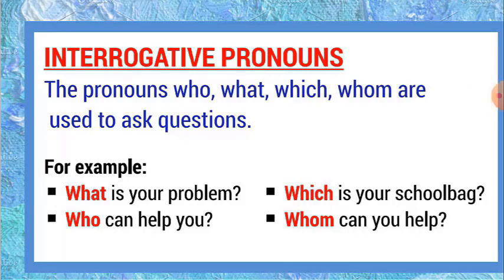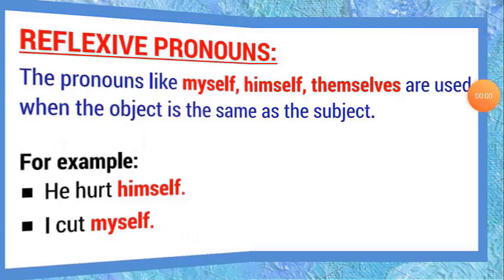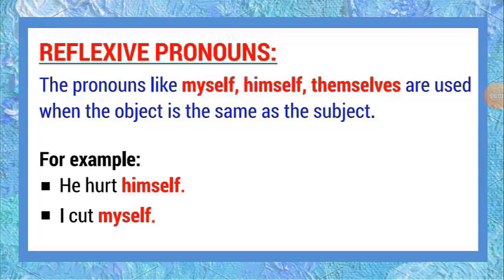Reflexive pronouns. The pronouns like myself, himself, and themselves are used when the object is the same as the subject. For example: 'He heard himself.' 'I cut myself.' Reflexive pronouns are always used as an object to a verb.